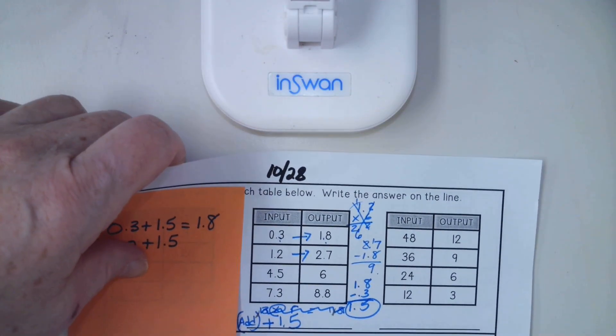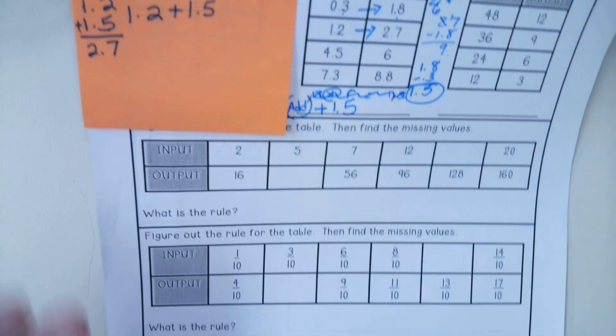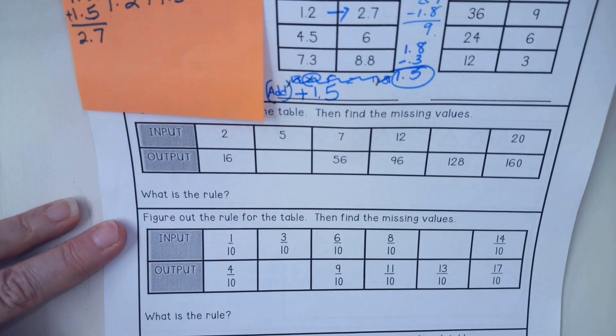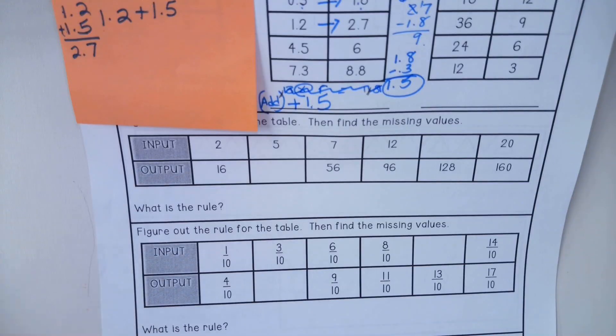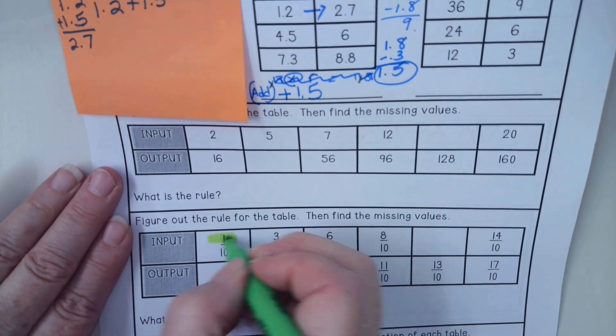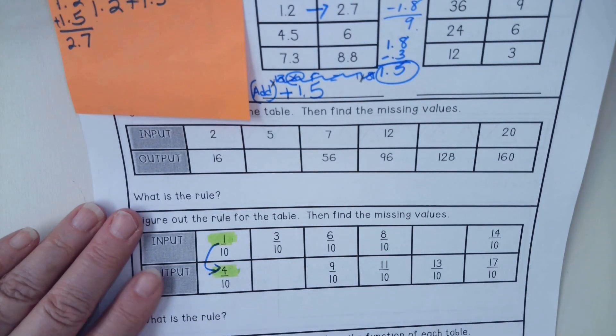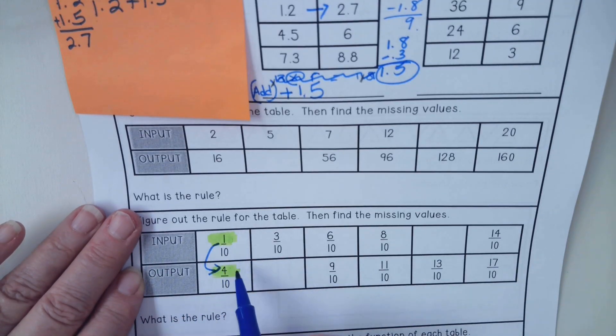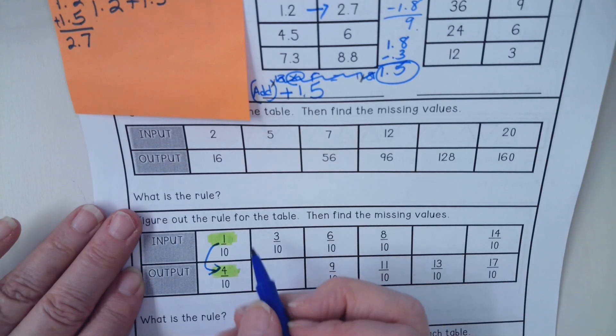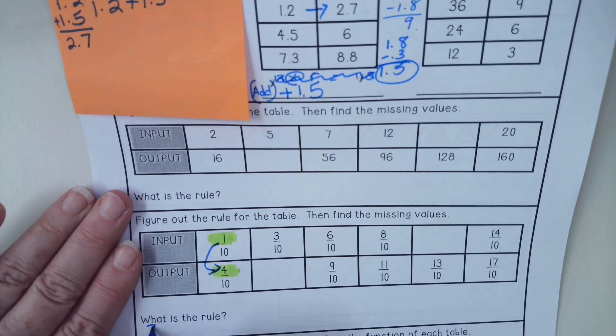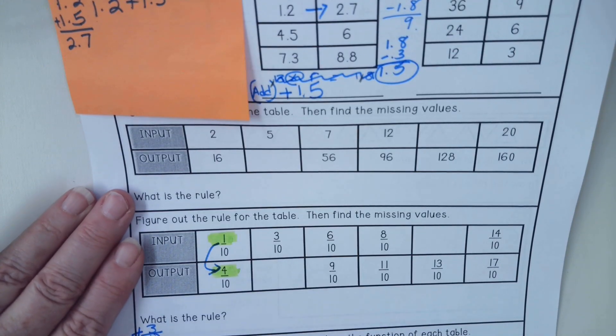We're going to move on to the fractions one on the bottom here. If I put 1 tenth in and I get 4 tenths out, how is it changing? Is the 1 getting bigger or smaller? We're going to look at our numerator, the number on the top. I see that this is getting bigger. So I am thinking 1, 2, 3, 4. I am thinking we are adding 3 tenths. That's going to be my first guess for a rule.